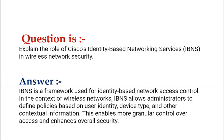Our next interview question is: explain the role of Cisco's Identity-Based Networking Services (IBNS) in wireless network security. Your answer should be: IBNS is a framework used for identity-based network access control. In the context of wireless networks, IBNS allows administrators to define policies based on user identity, device type, and other contextual information. This enables more granular control over access and enhances overall security.